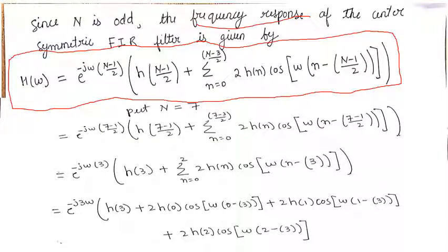Now, in this equation we put the value of N as 7, since in the question it is mentioned N ranges from 0 to 6. Therefore, we take value of N as 7.